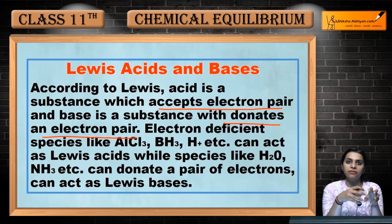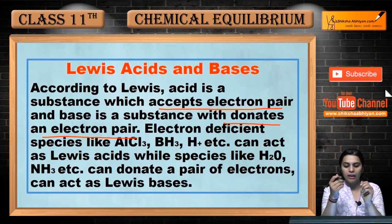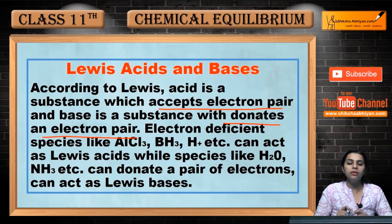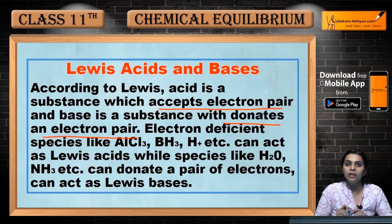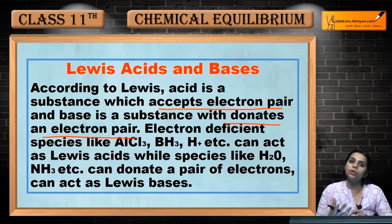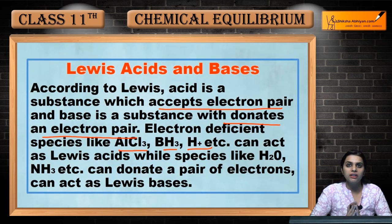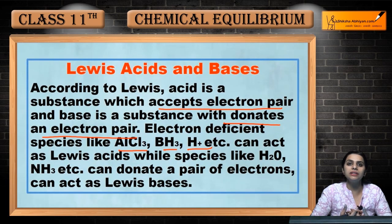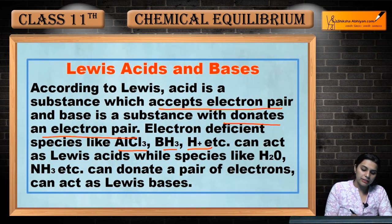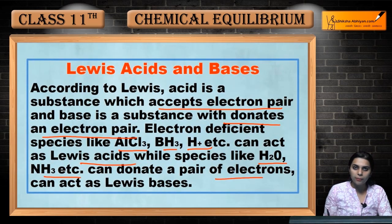That means the base has sufficient or extra electrons, so it donates electrons. Electron-deficient compounds are called Lewis acids because they will accept an electron pair. Examples include AlCl₃, BH₃, H⁺, etc. Wherever there is a positive charge on a species, that species will be electron deficient and can act as a Lewis acid.